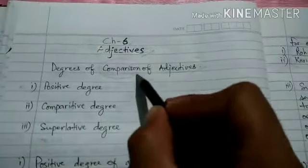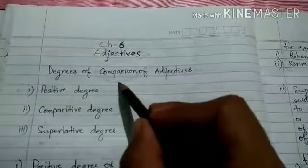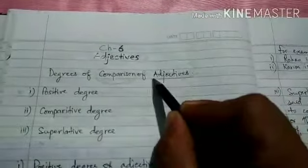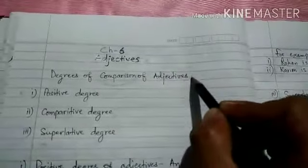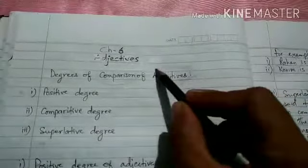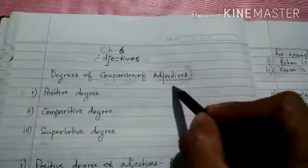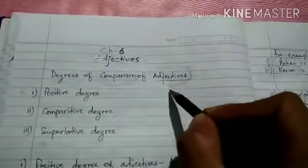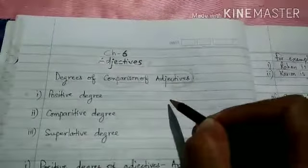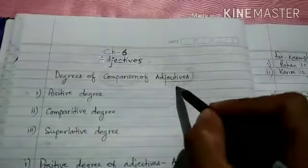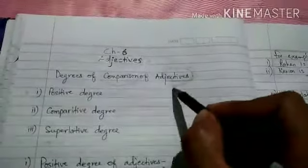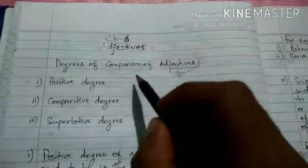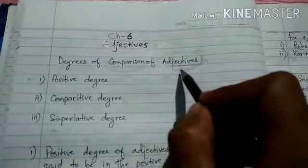Here we have to understand the word comparison. Whenever we compare a noun with another noun or a pronoun with another pronoun, we use adjectives to bring their comparison. Because adjectives show the qualities of nouns and pronouns. When we compare them by showing their worth, there we use adverbs, and it is called the degrees of comparison of adverbs, which we are going to understand in a later chapter. But here we are going to understand the degrees of comparison of adjectives.